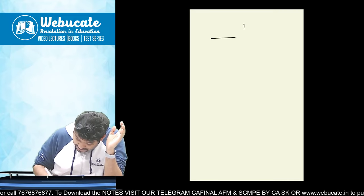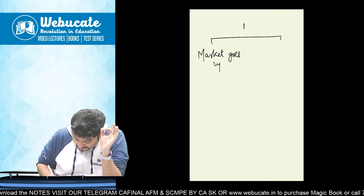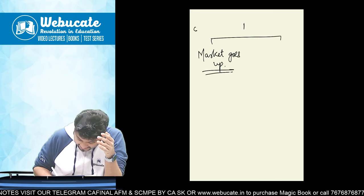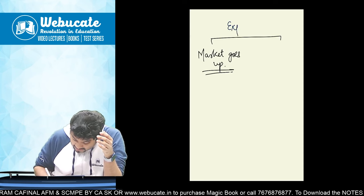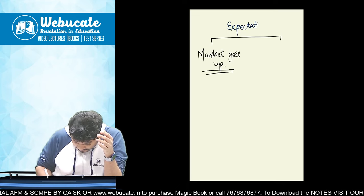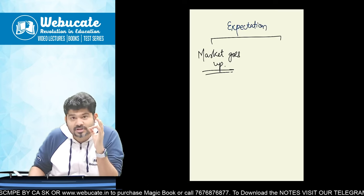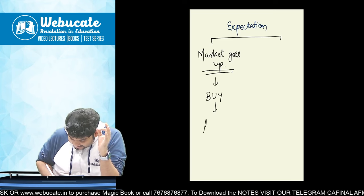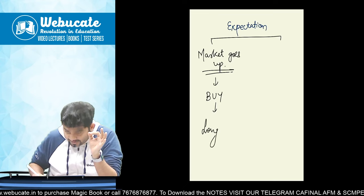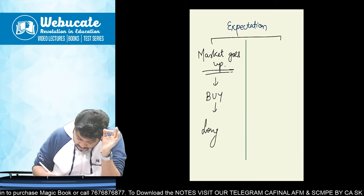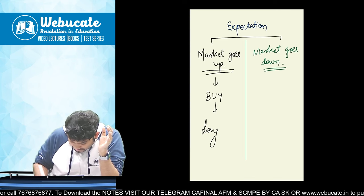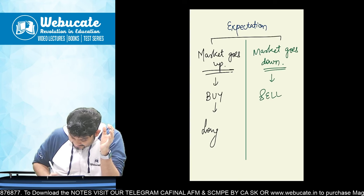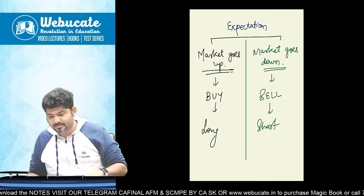So there are two options. If the expectation is that the market may go up, then I will buy, which in futures language is called 'long'. If the market is going to go down, then I will sell, which in futures language is called 'short'. So: market goes up → expectation is bullish → action is long. Market goes down → expectation is bearish → action is short.